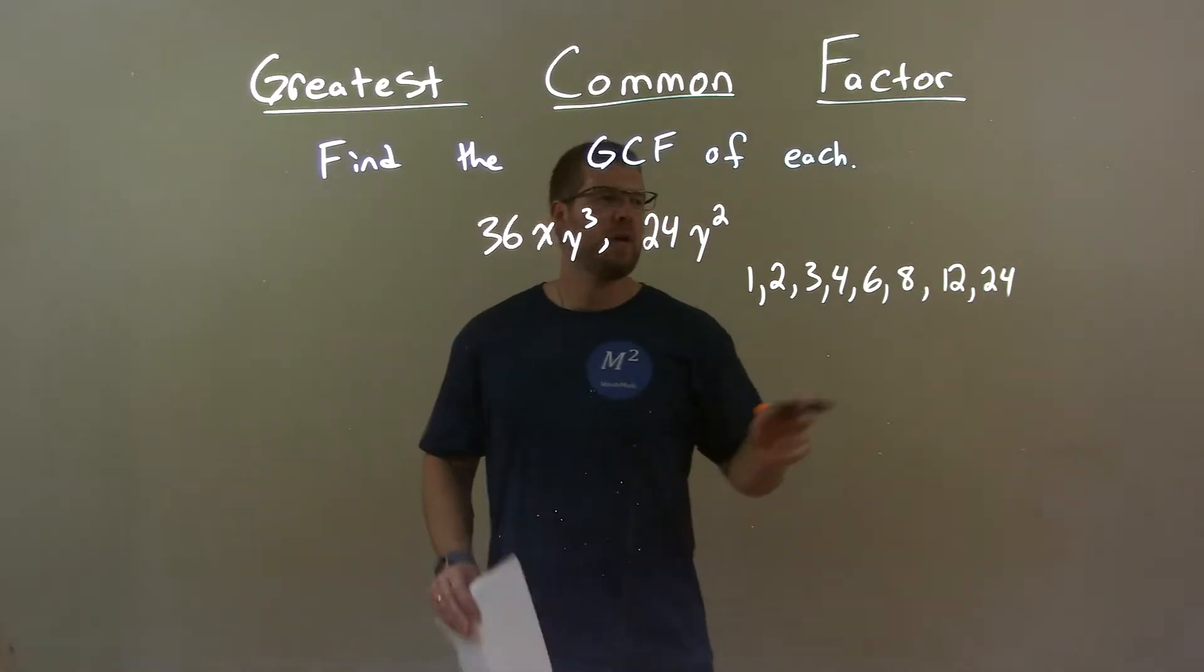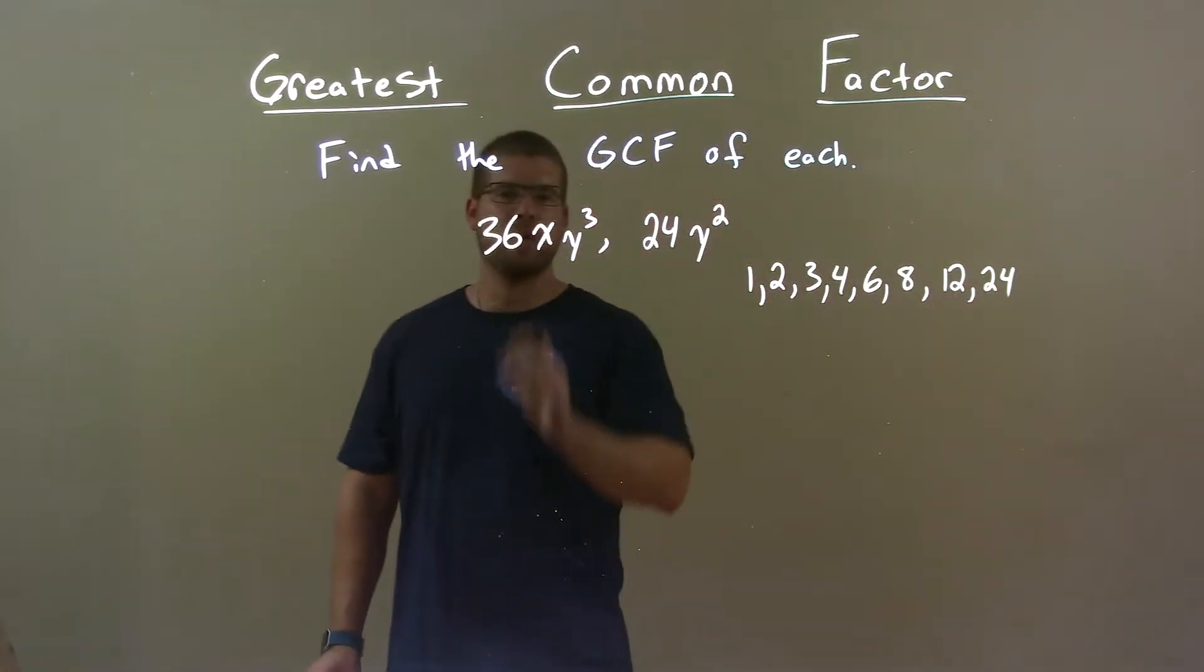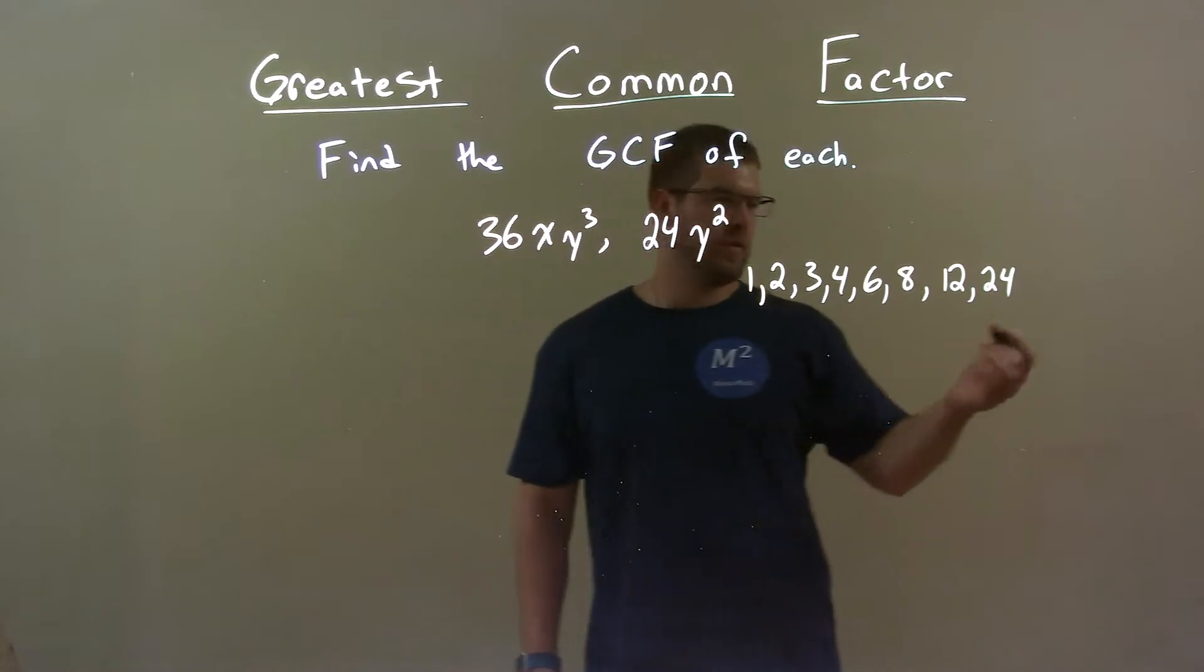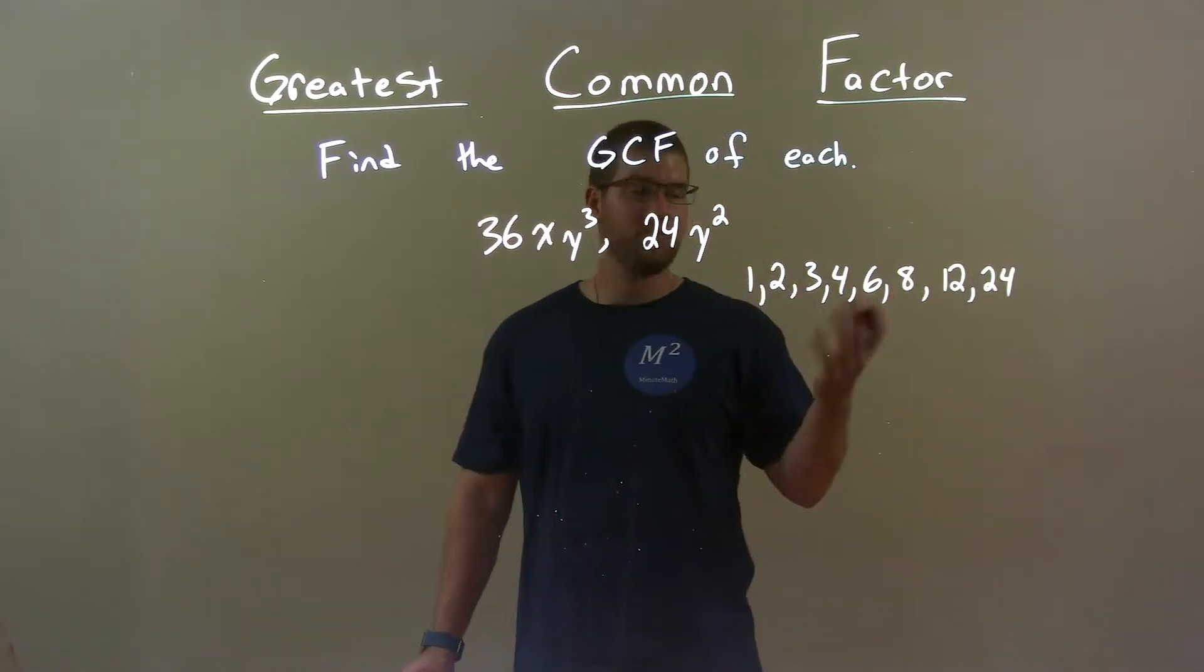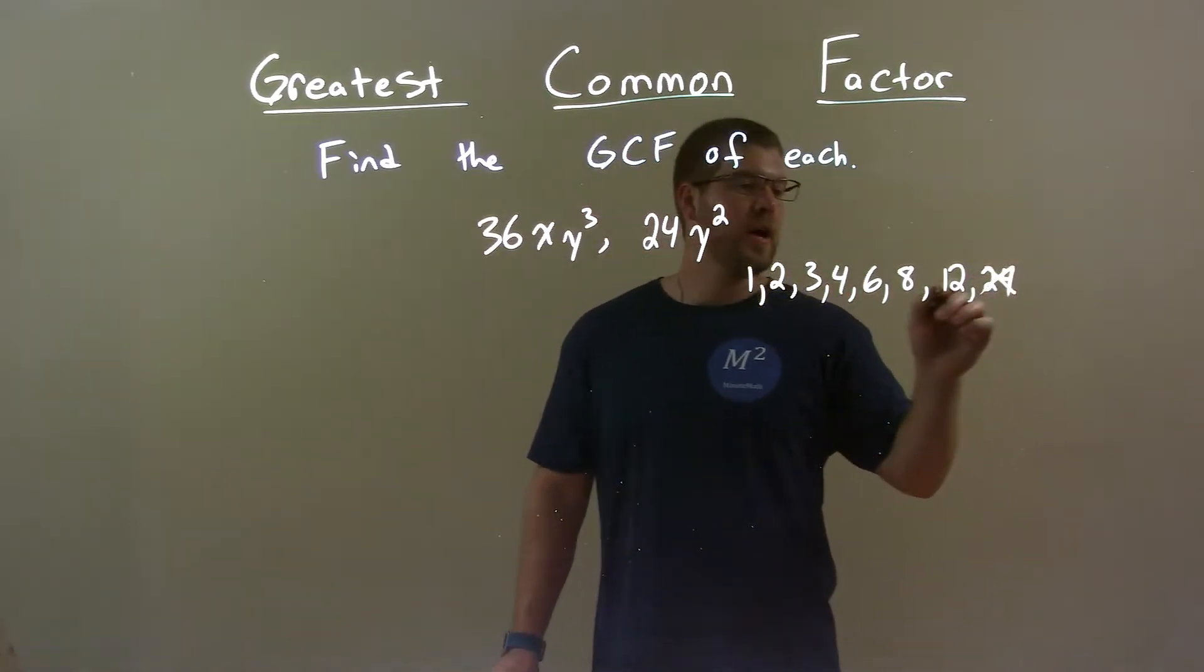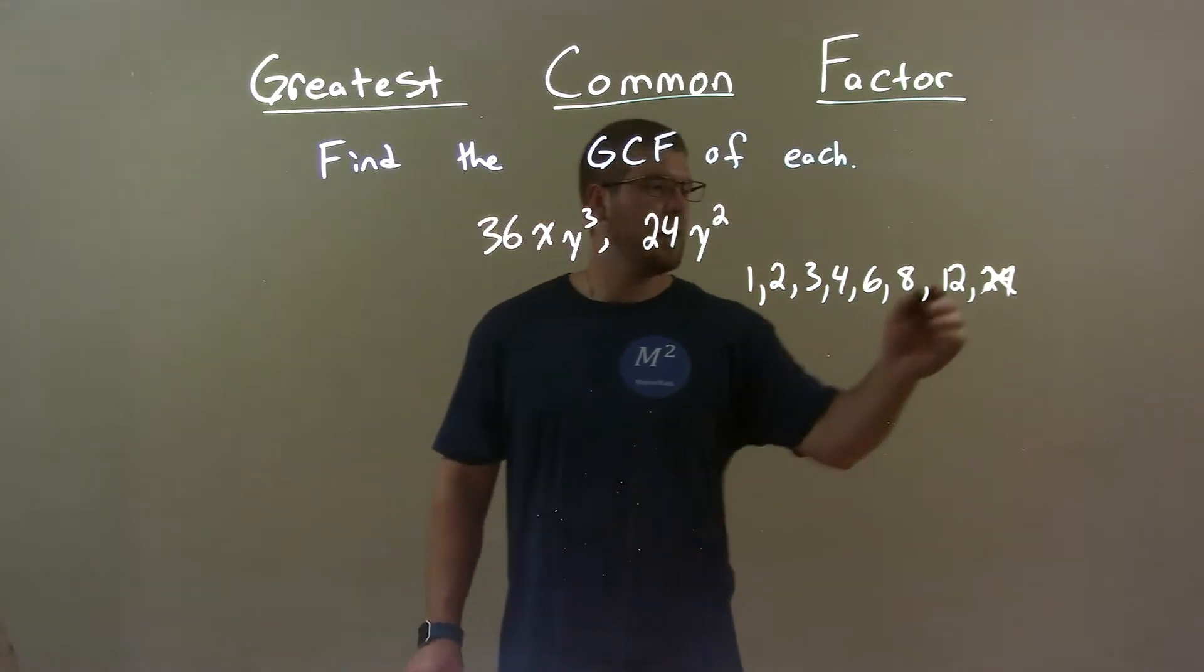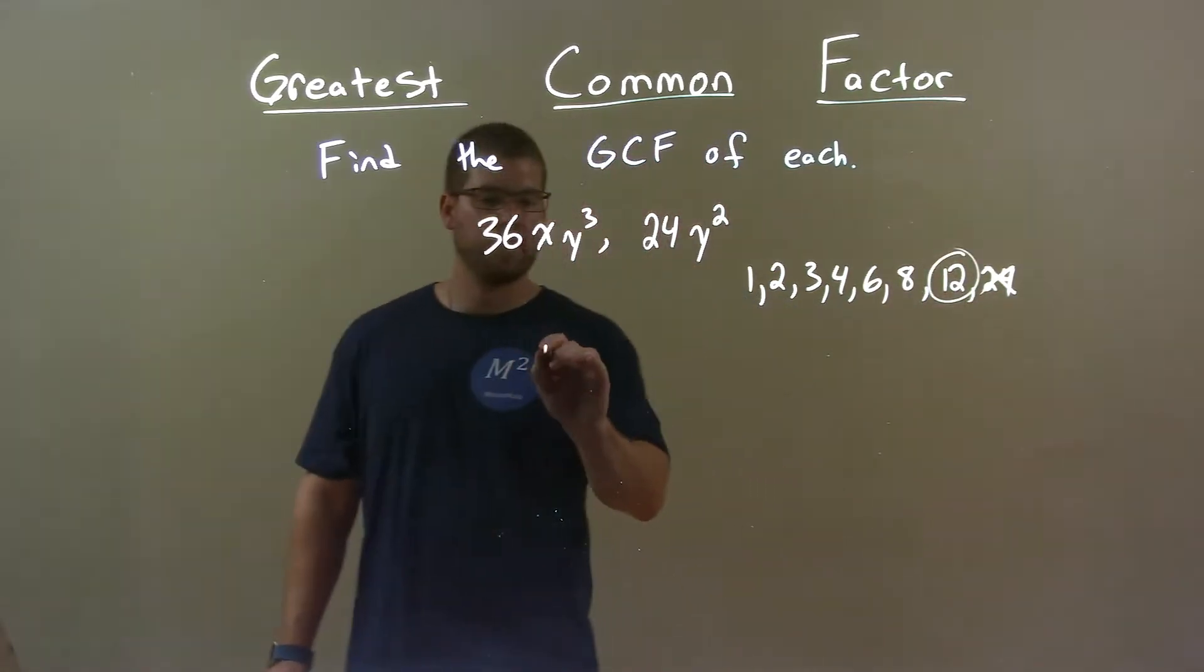Okay, so now I want to see which one's the largest one of these that also goes into 36. Well, 24 can't go into 36 because 2 times 24 is 48. So we're out there. But 12 goes into 36 three times. So we found a number fairly quickly: 12 here.